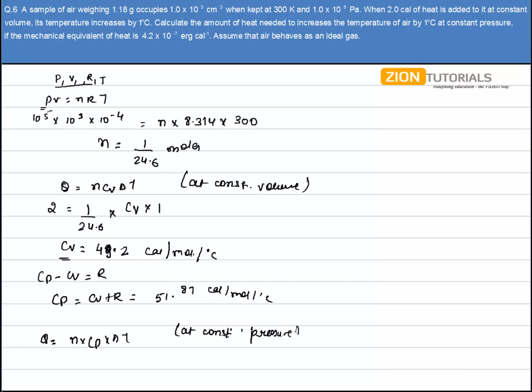So I have all the values now. The value of n is 1 by 24.6, Cp is 51.87, and ΔT is again 1. So Q comes out to be 2.08 calories. That is the answer.